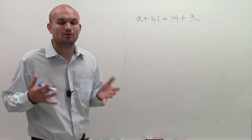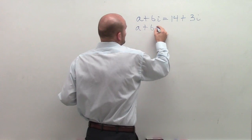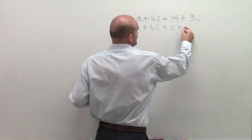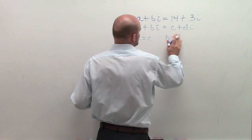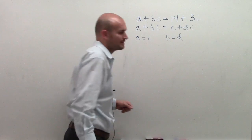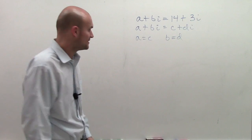So remember, the equality of complex numbers stated that A plus BI is equal to C plus DI, as long as A equals C and B equals D, where A, B, and C and D are going to represent real numbers.